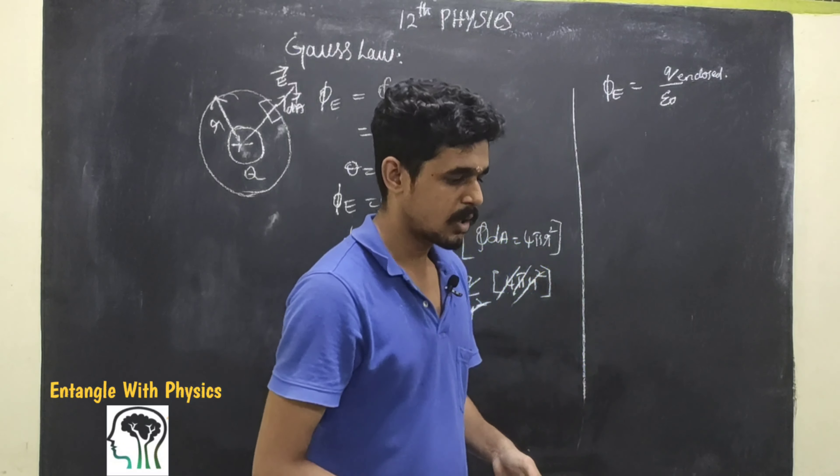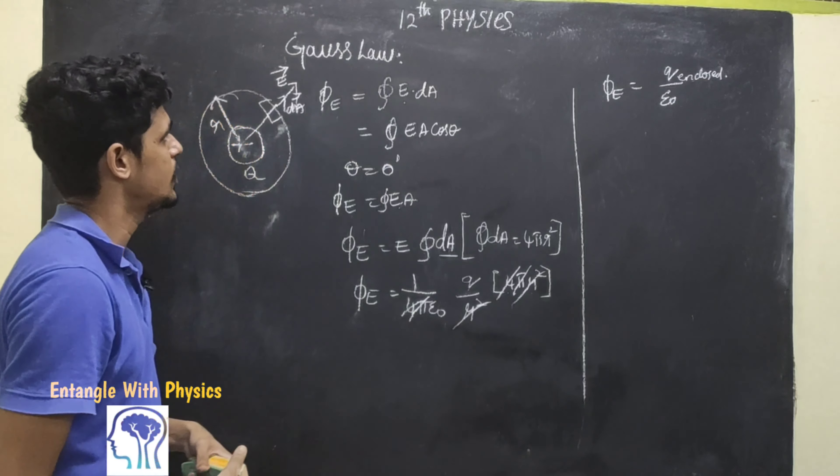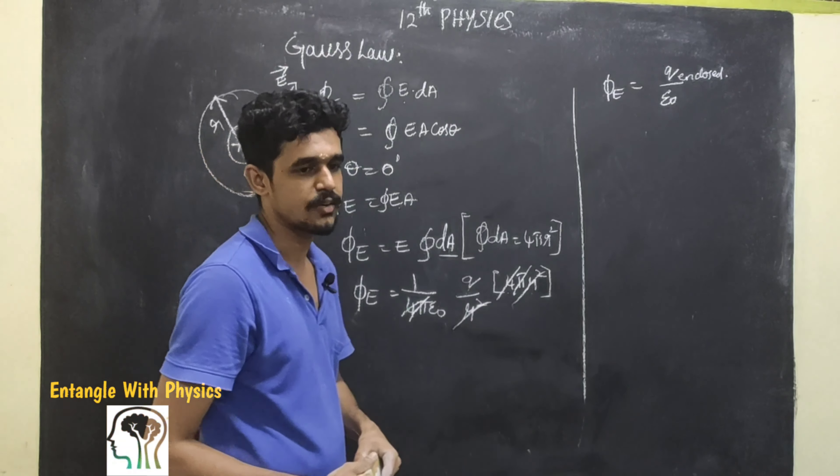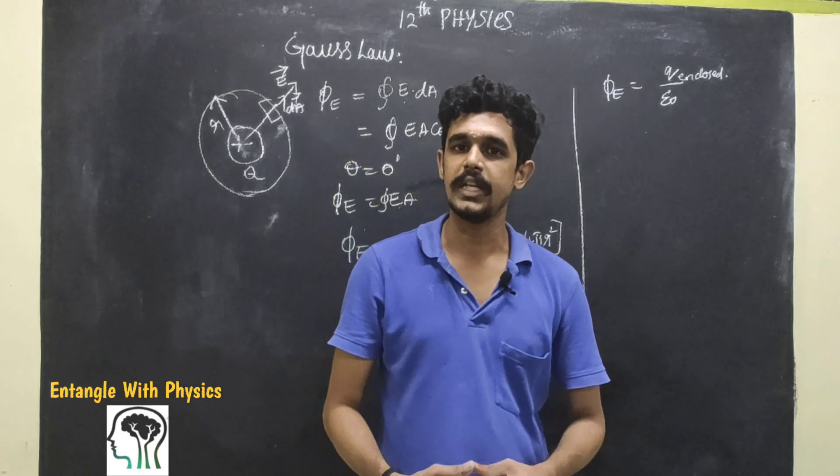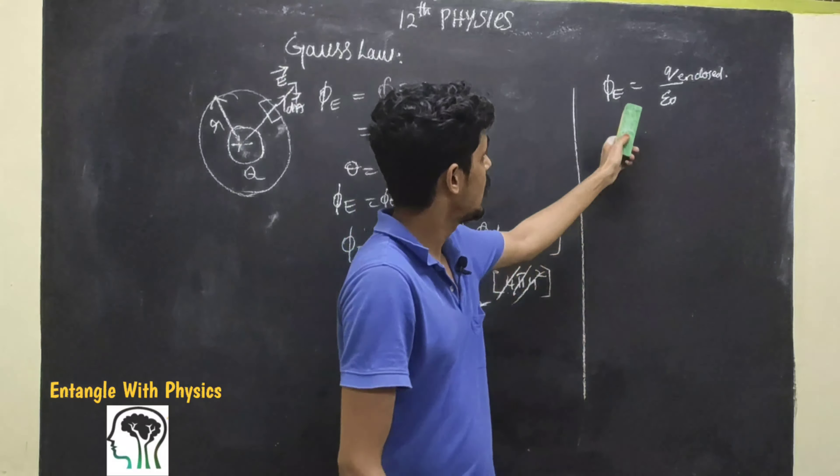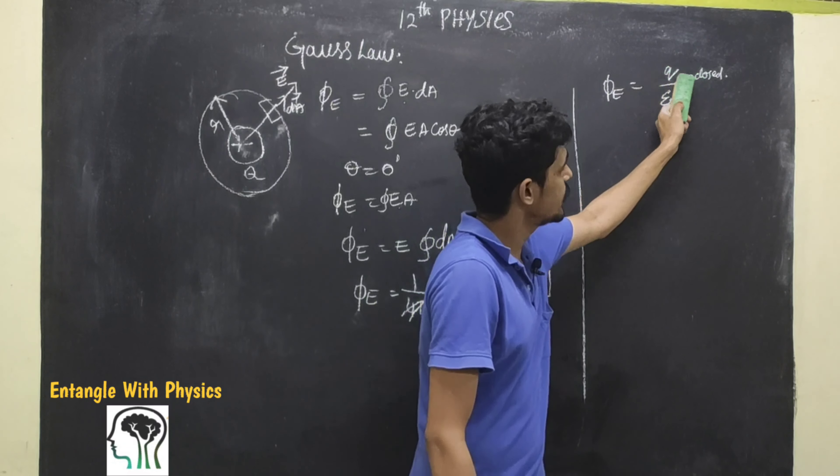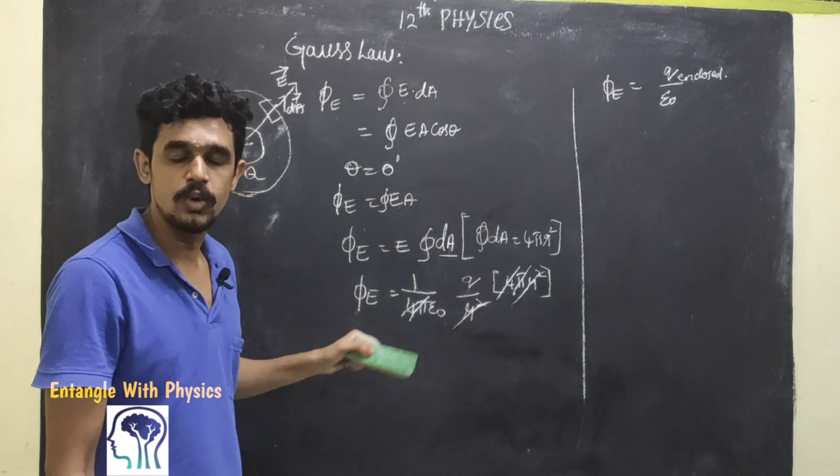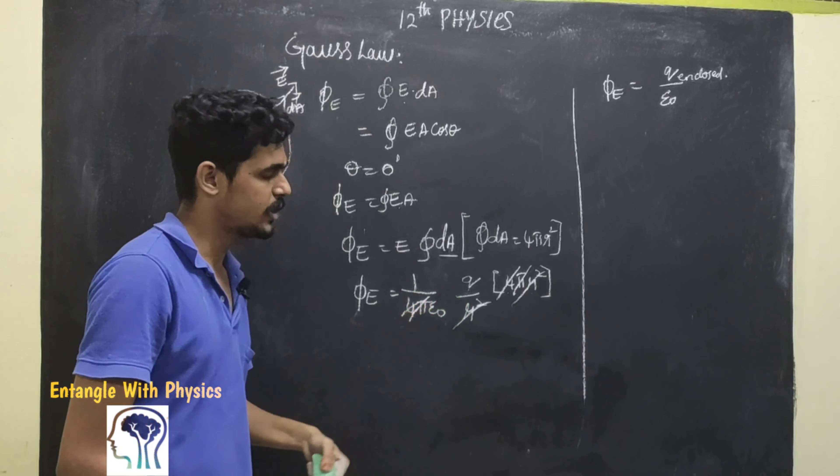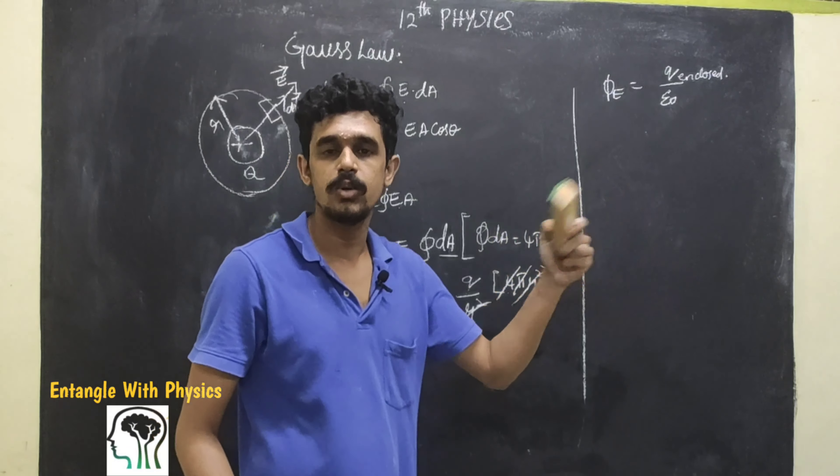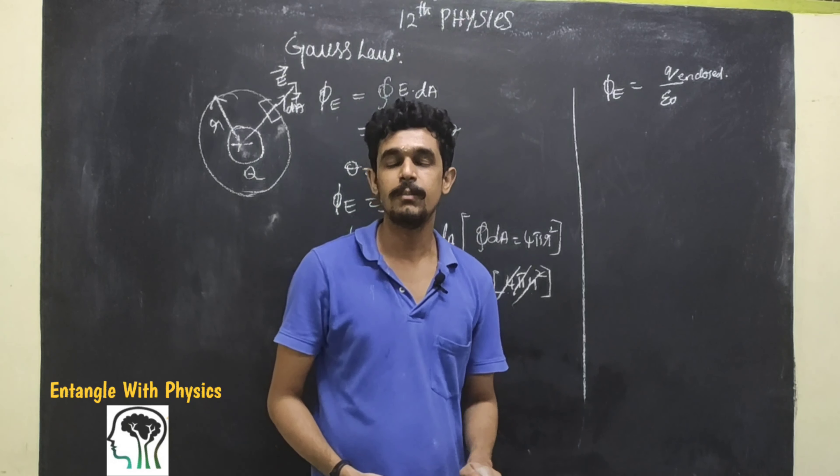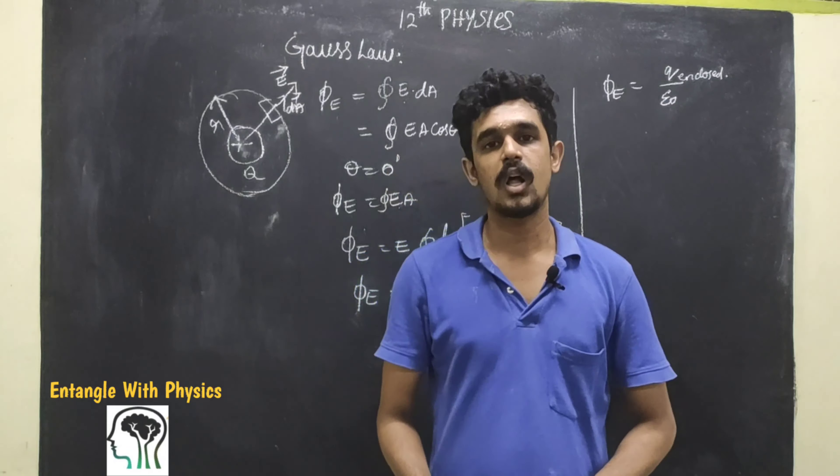At any point here, we can choose a spherical surface, but it can be any closed surface. In the closed surface, Q enclosed determines the electric field, both outside and inside.